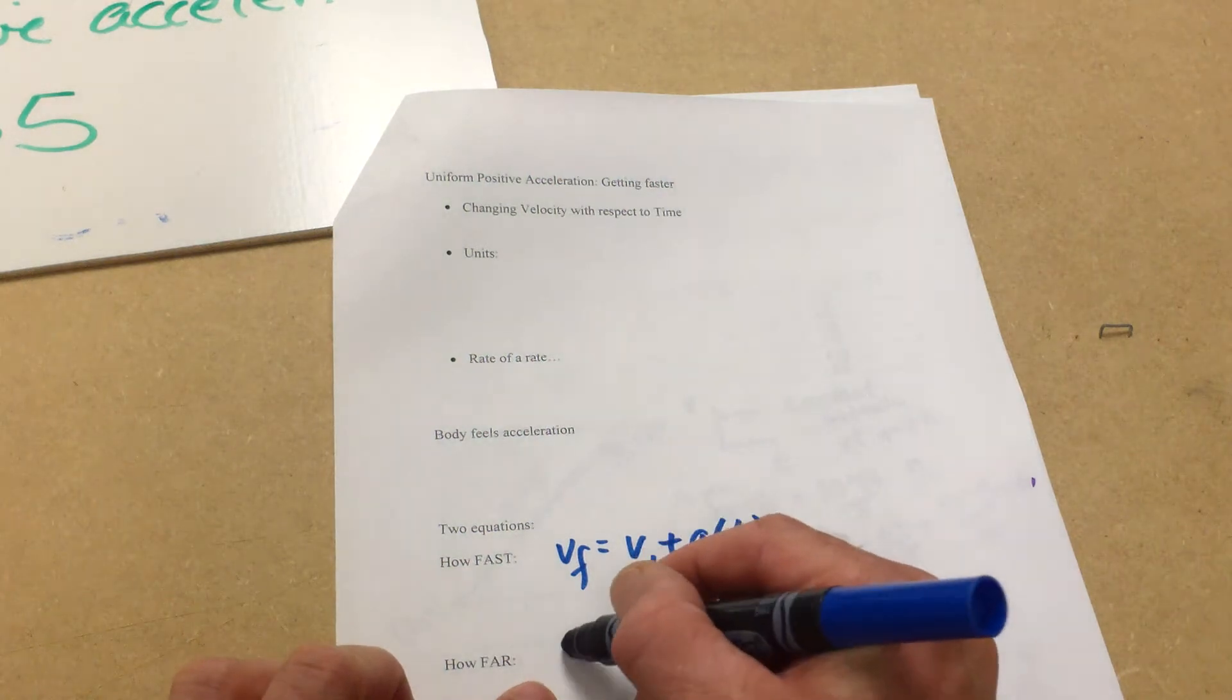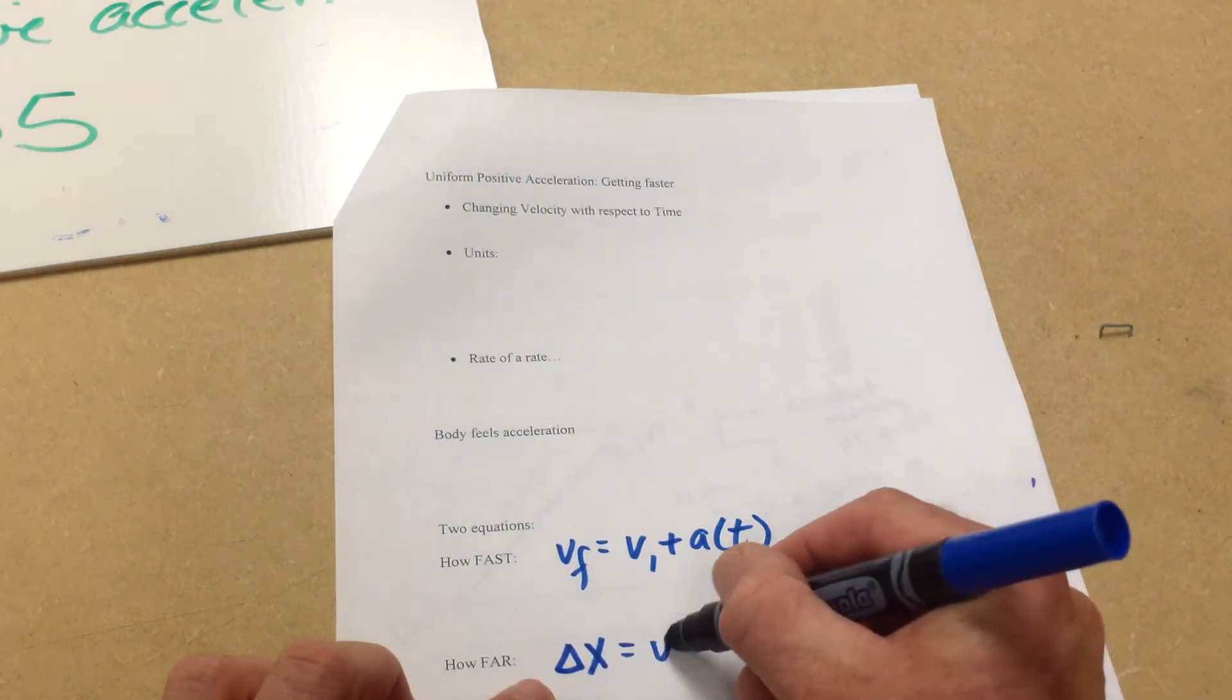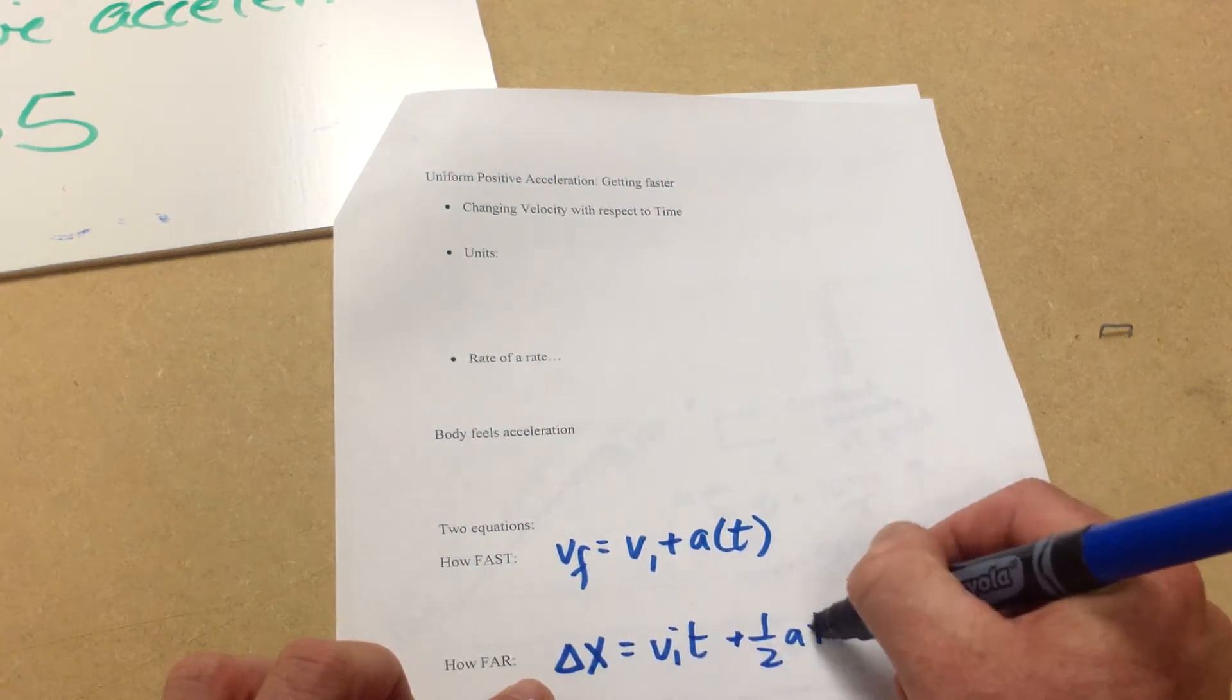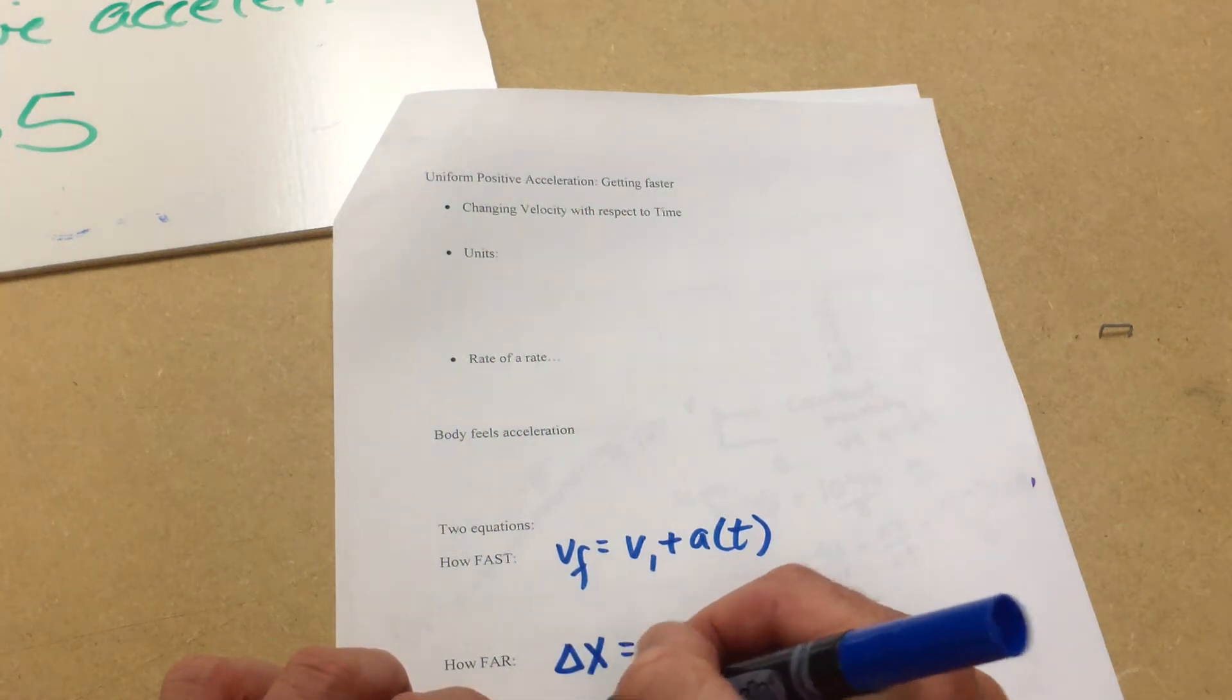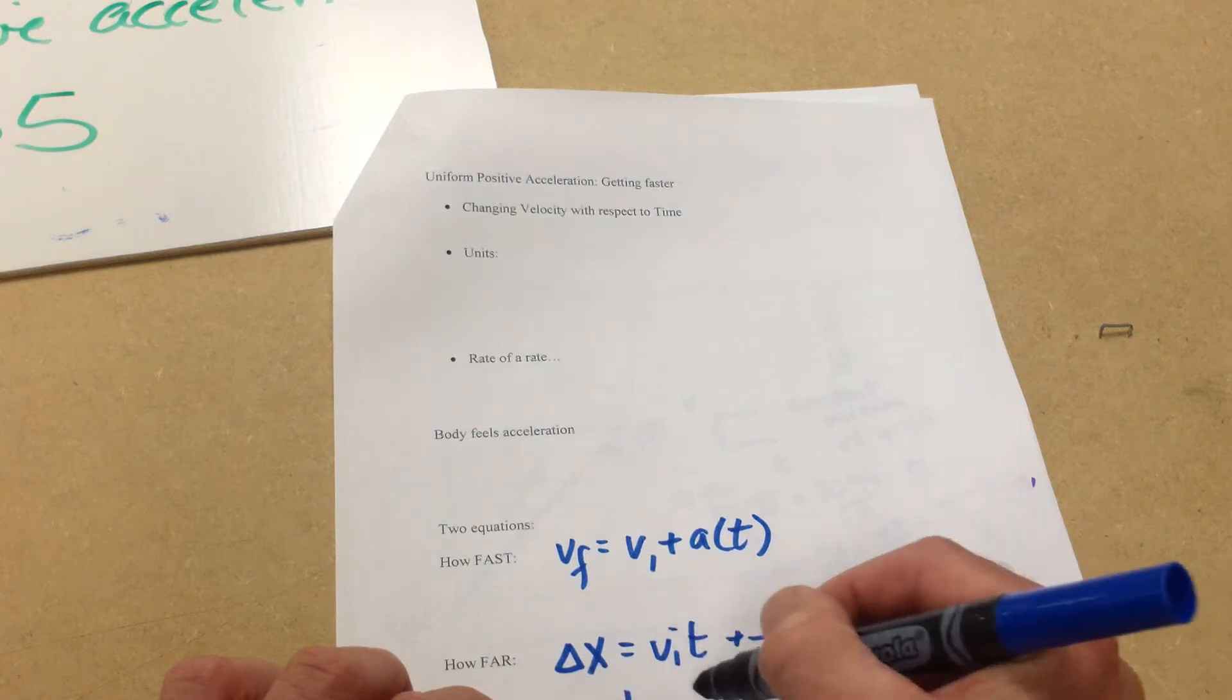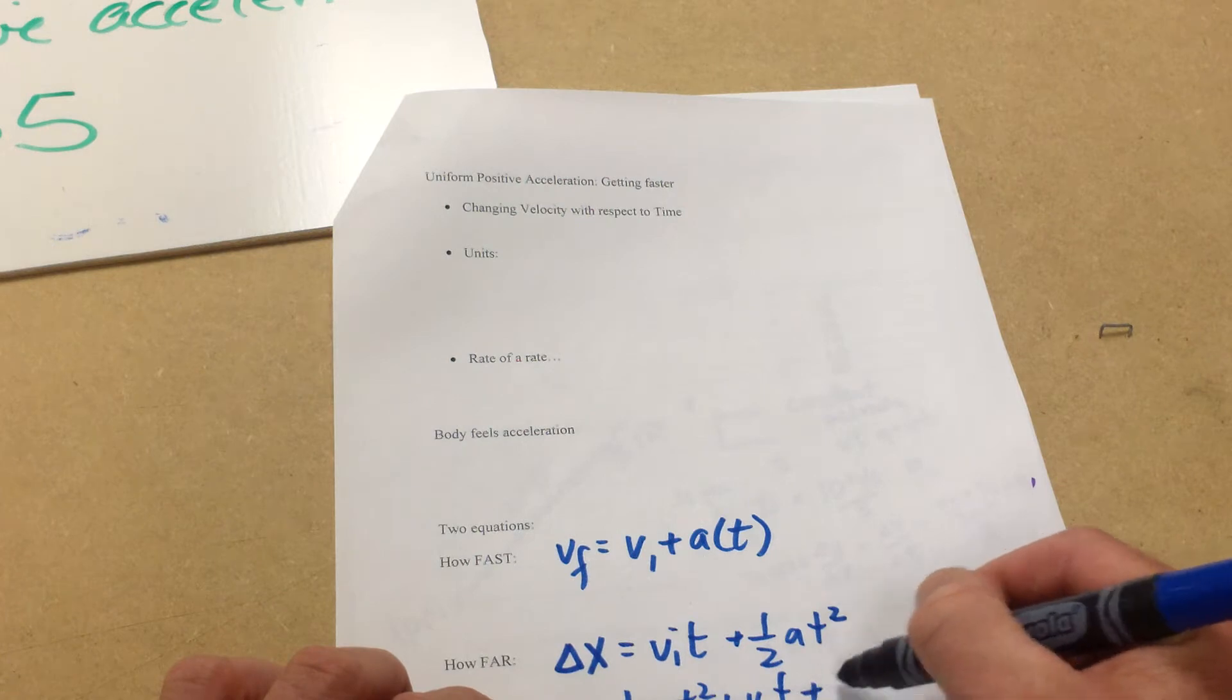And then we have our how far equation. We can write that delta X equals vi*t plus one-half a*t squared. Now some textbooks will write this xf equals one-half a*t squared plus vi*t plus xi.